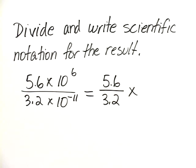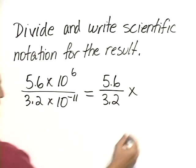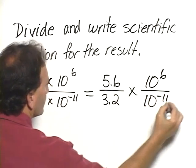Then we multiply by dividing the powers of 10 expressions. In other words, 10 to the 6 divided by 10 to the minus 11.